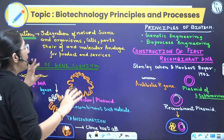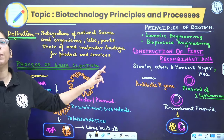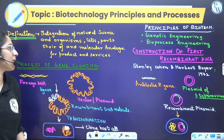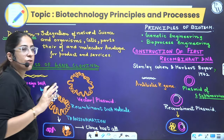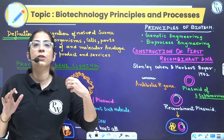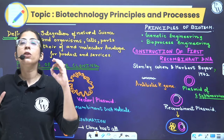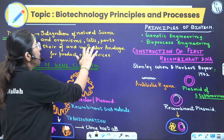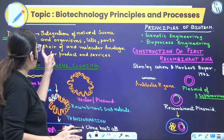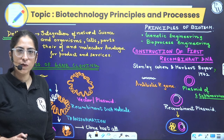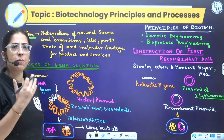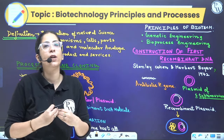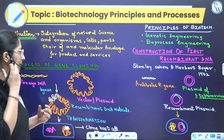The actual definition is given by the European Federation of Biotechnology, and you have to remember it as such: integration of natural science — natural science means microorganisms, their physiology, their anatomy — and organism, cells, sometimes their parts, their molecular analogues, for example DNA, RNA, proteins, etc., for products and services. This definition should be very much clear to you.